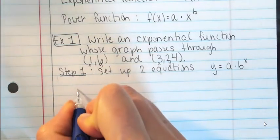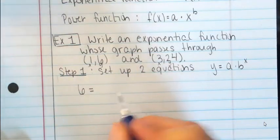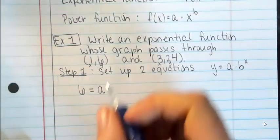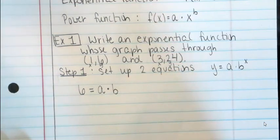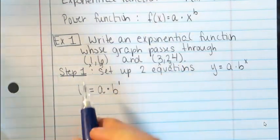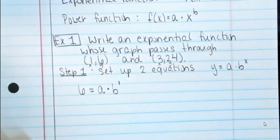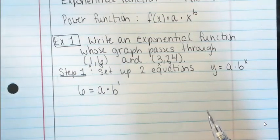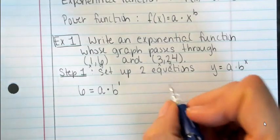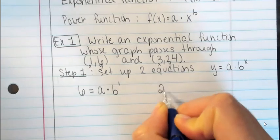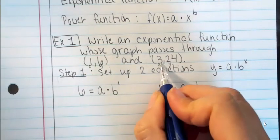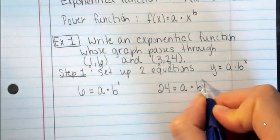My first equation: 6 equals a times b to the first. I don't know what a is, and I don't know what b is — those are what I need to figure out. But I do know x is 1. If I have two unknowns, I need two equations. So my second equation is: 24 equals a times b to the third power.